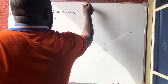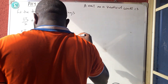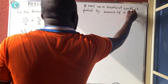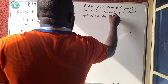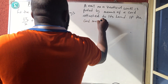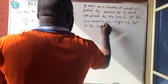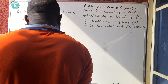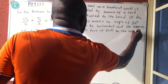The next question: a nail on a vertical wall is pulled by means of a cord attached to its head. The cord makes an angle of 60° to the horizontal and exerts a force of 80 Newtons on the nail.